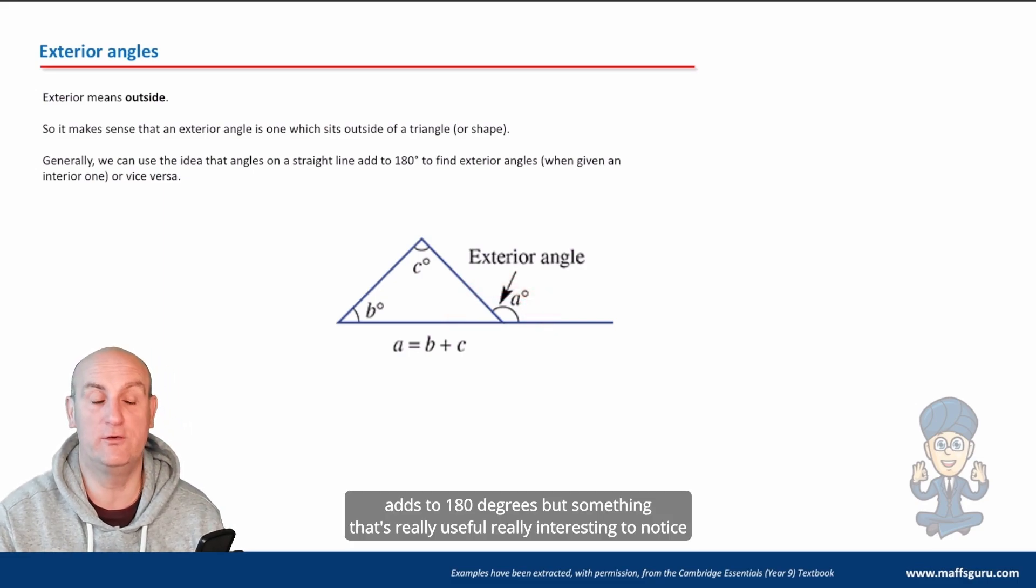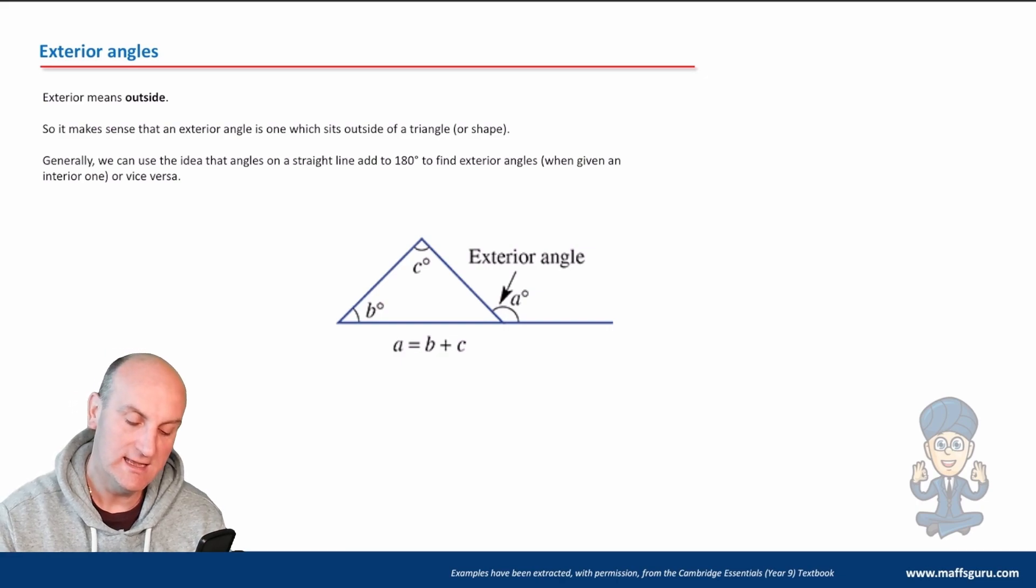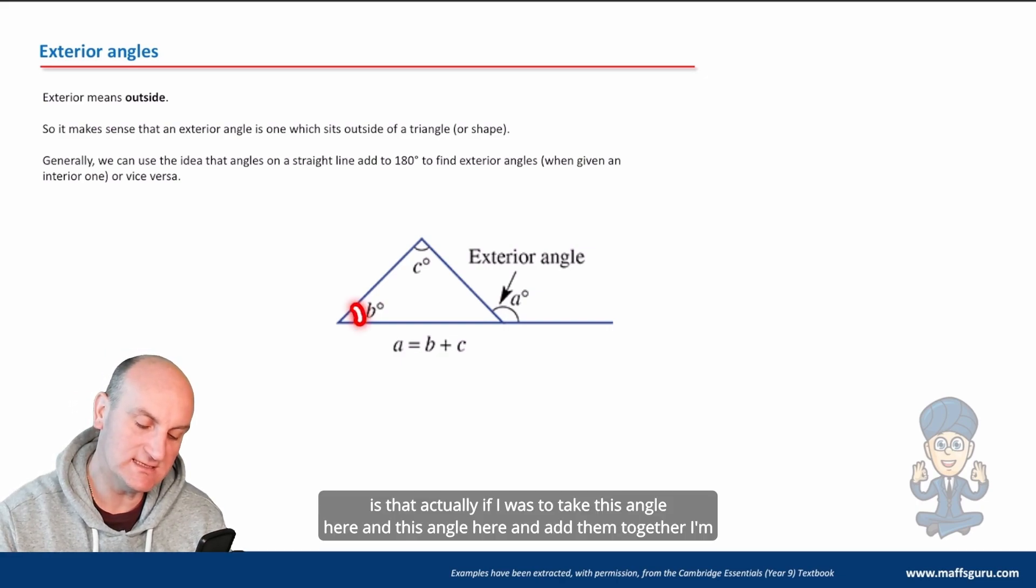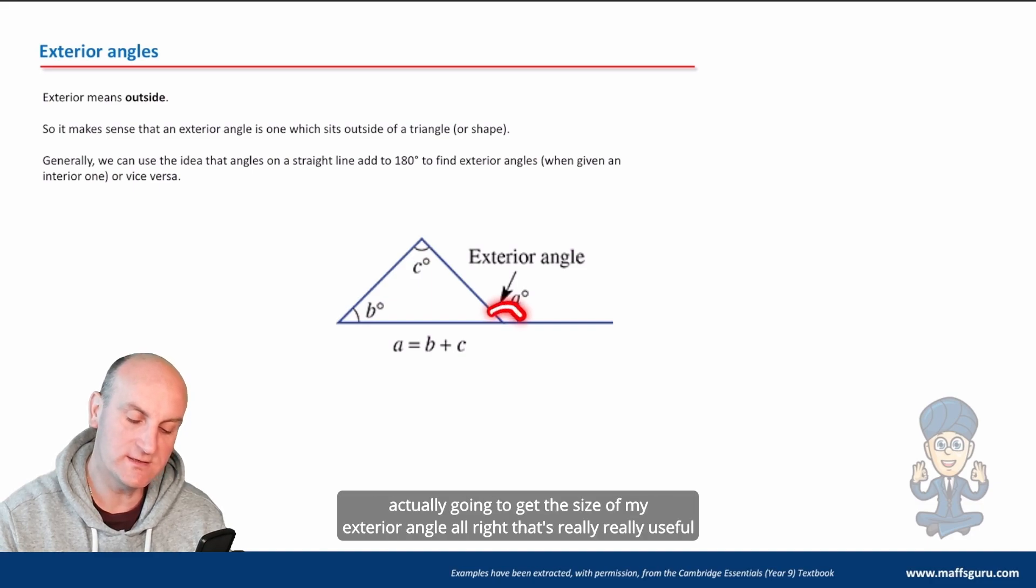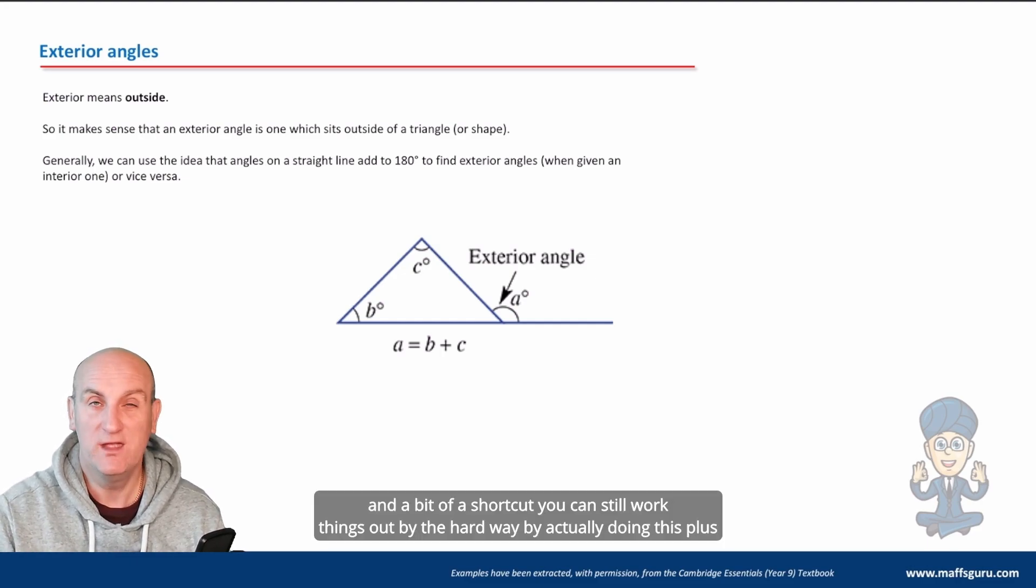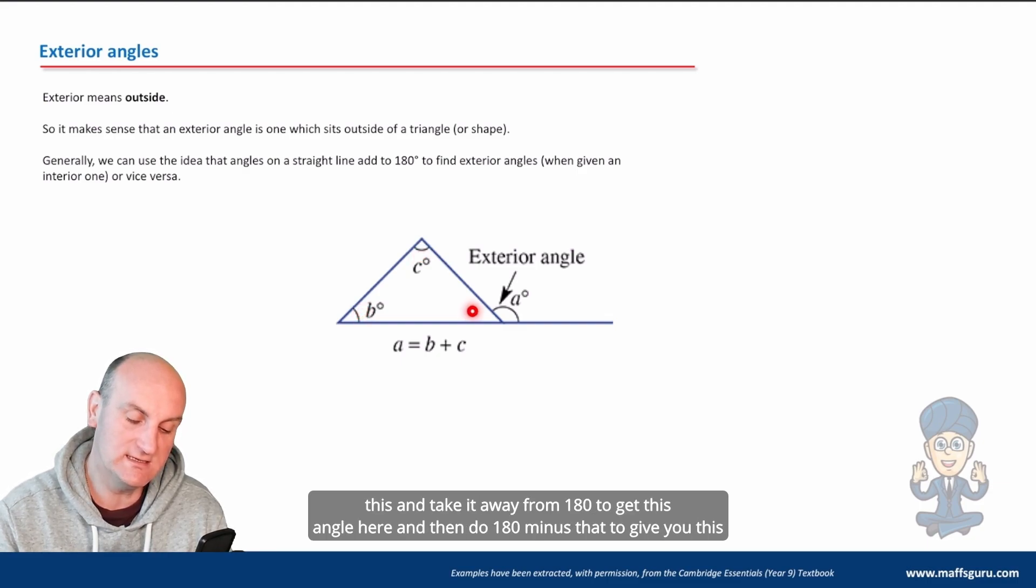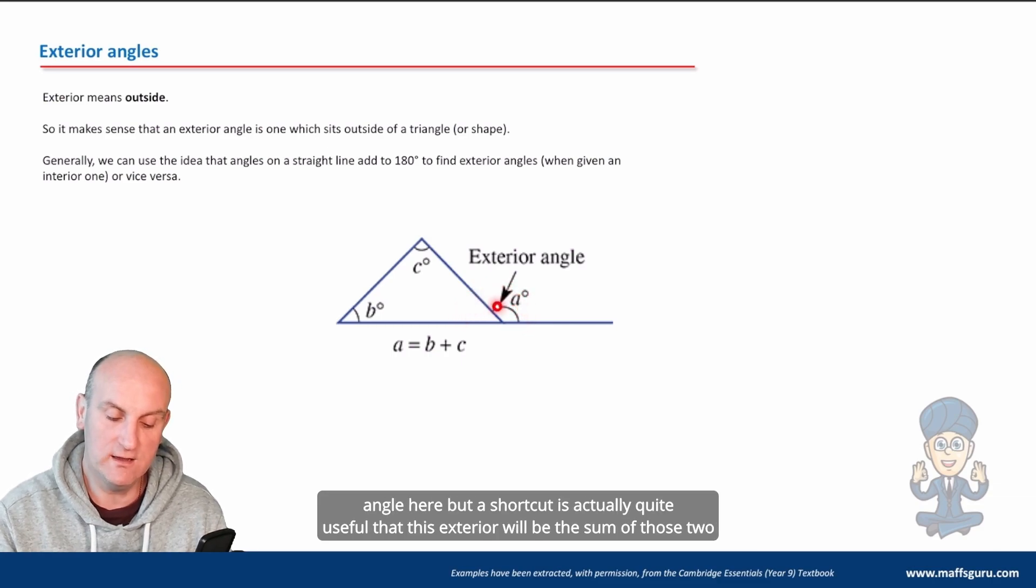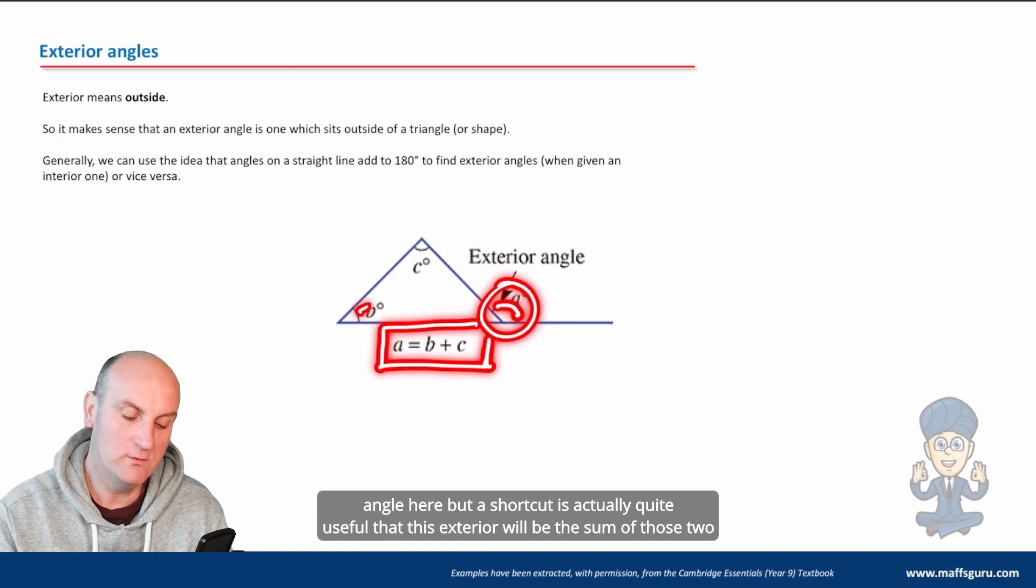The trick here is that this adds to 180 degrees, so this here adds to 180 degrees. But something that's really useful and interesting to notice is that actually if I was to take this angle here and this angle here and add them together, I'm actually going to get the size of my exterior angle. That's really useful and a bit of a shortcut. You can still work things out the hard way by doing this plus this and taking it away from 180 to get this angle here and then do 180 minus that to give you this angle here. But a shortcut is that this exterior will be the sum of those two angles there. I like that.